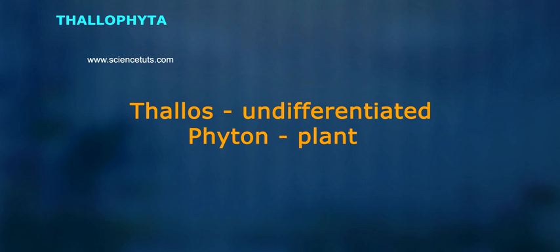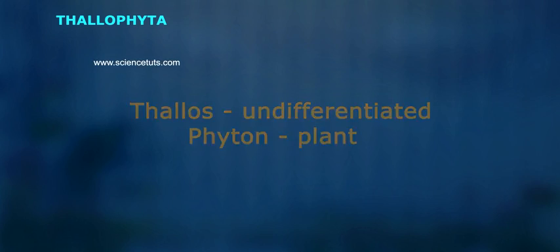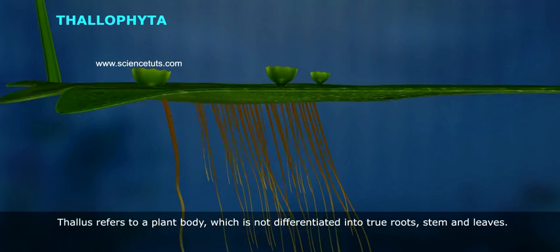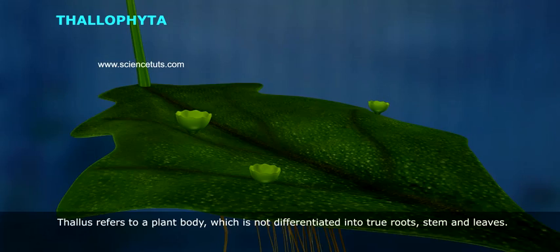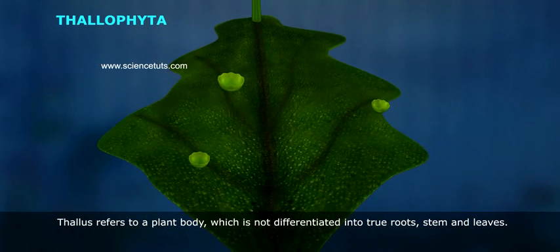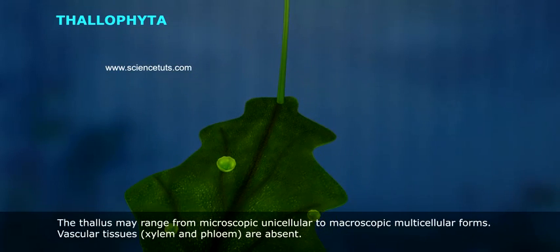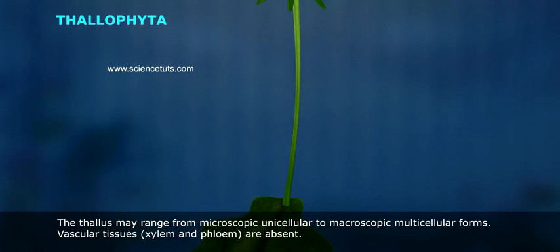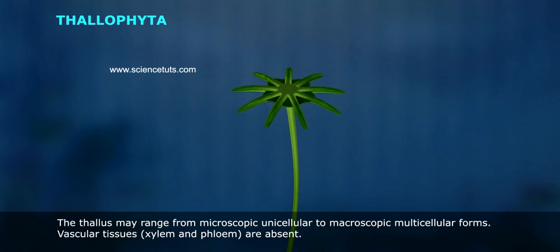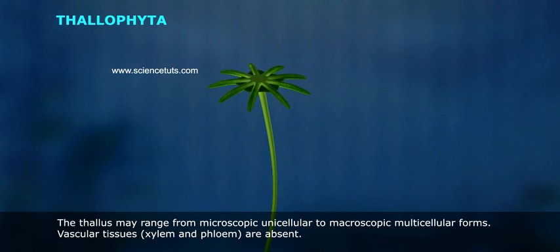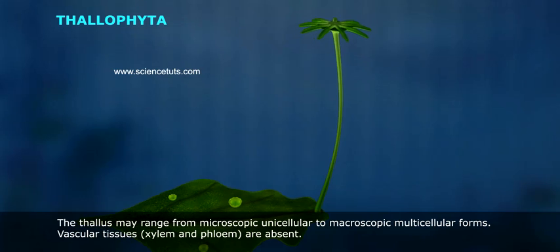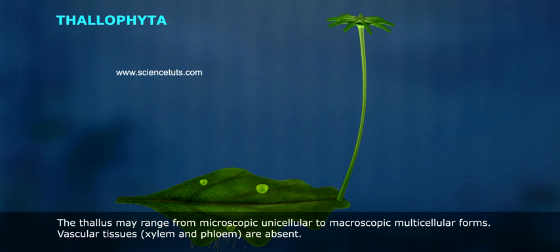Thallus means undifferentiated; Phyton means plant. Thallus refers to a plant body which is not differentiated into true roots, stem and leaves. The thallus may range from microscopic unicellular to macroscopic multicellular forms. Vascular tissues, Xylem and Phloem, are absent.